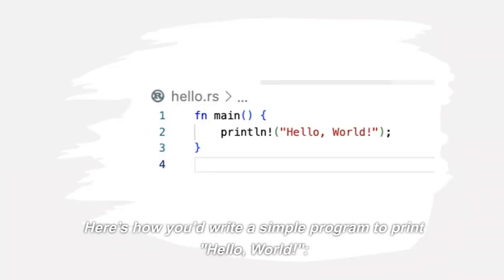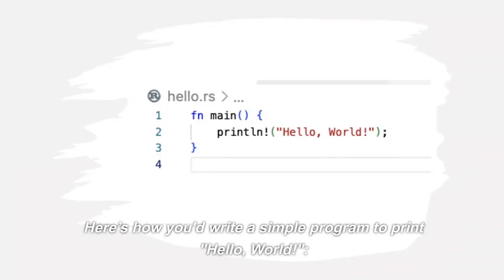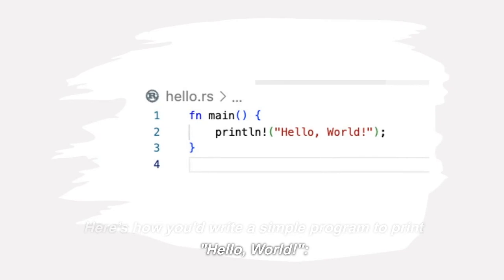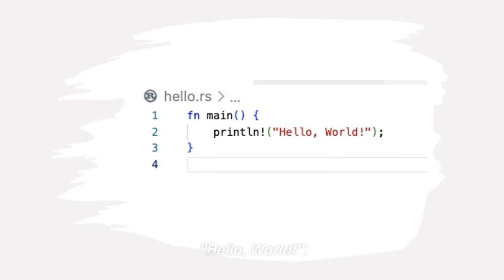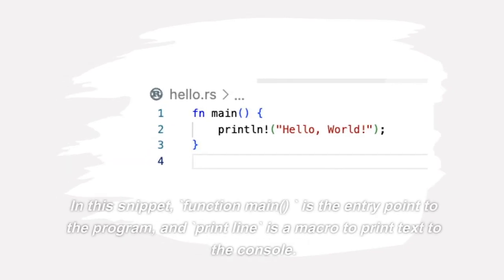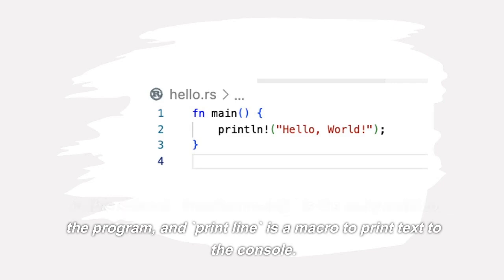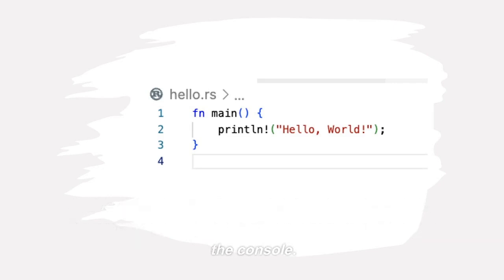Now let's look at some basic Rust code. Here's how you'd write a simple program to print Hello World. In this snippet, function main is the entry point to the program, and println is a macro to print text to the console.